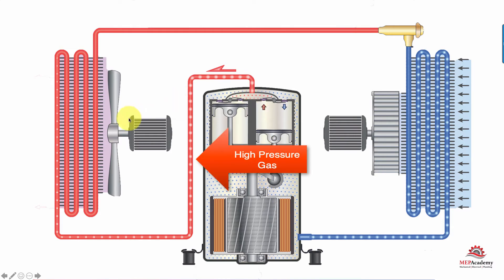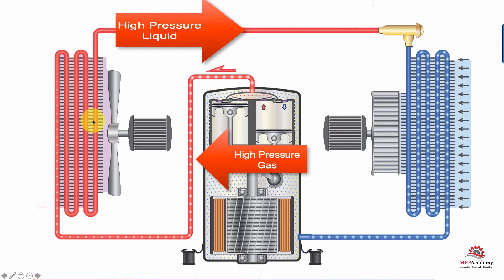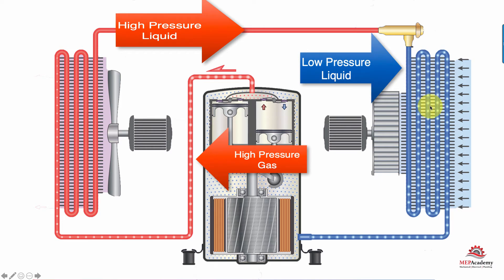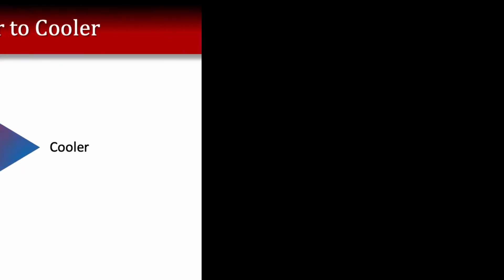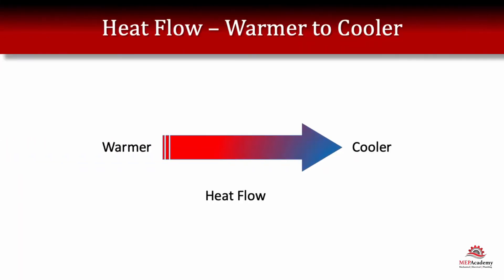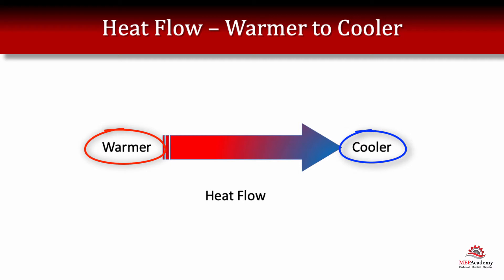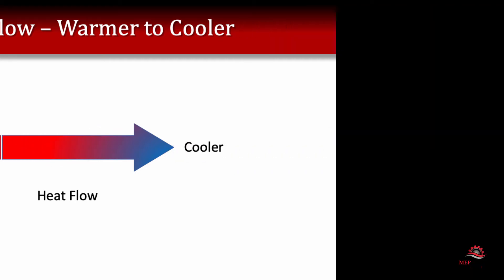The complete cycle is: high pressure gas, to high pressure liquid, to low pressure liquid, to low pressure gas. Now, heat flow — heat flows from a warmer medium to a cooler medium. It always flows in one direction, from the warmer to the colder.